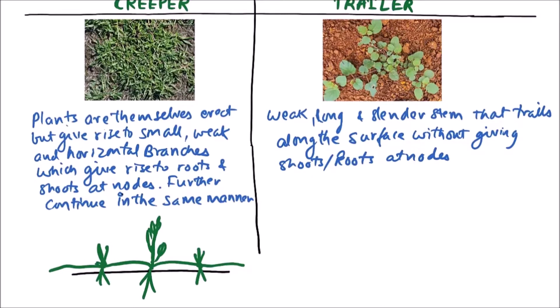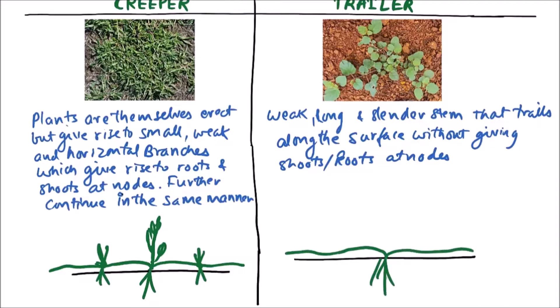While in case of trailers, it is quite different. In case of trailer, if this is a surface, then the plants give branches horizontally. This is the root of the main plant and these are horizontal branches. It is a typical normal branch that is weak and growing horizontally only, without giving rise to any roots or shoots at nodes. Only the green leaves can be observed at nodes. So this is a trailer.